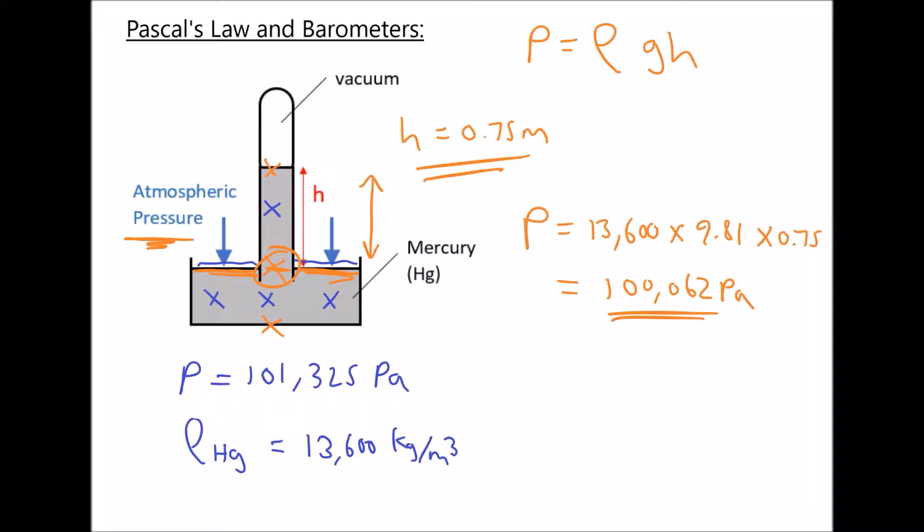If this barometer was filled with water as an example, then that column of liquid wouldn't be 0.75 meters, it would be 13.6 times larger. In actual fact, it would be just over 10 meters high.